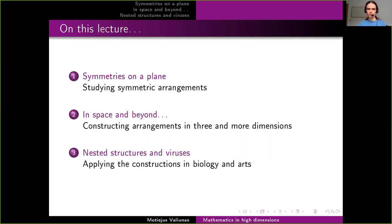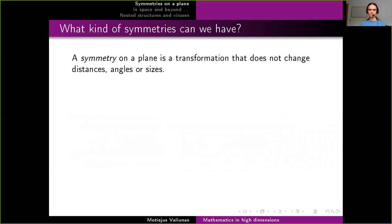Let's start with symmetries on a plane, which is just a two-dimensional object — a flat thing. A symmetry is basically just a transformation that does not change distances, does not change angles or sizes. So if you have a flat object you can move it around, but you cannot stretch it or do something like that.